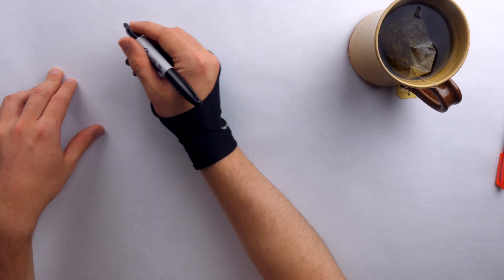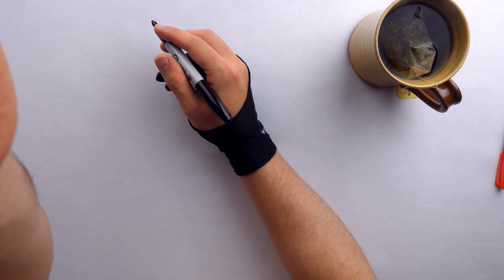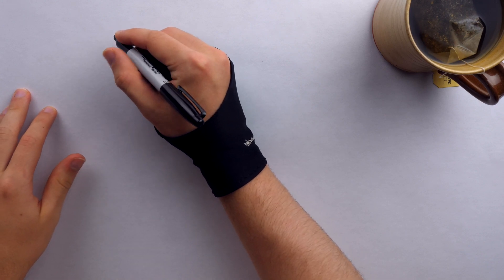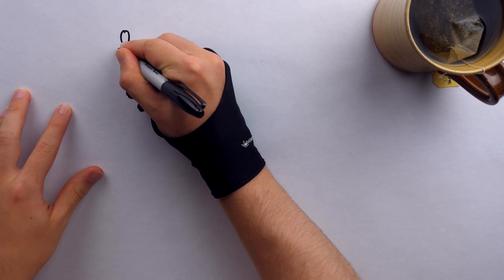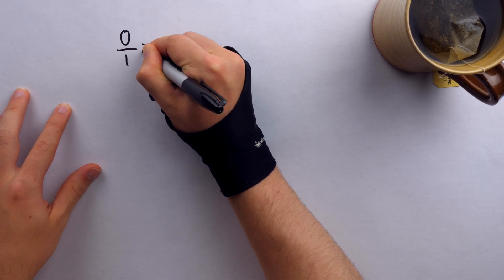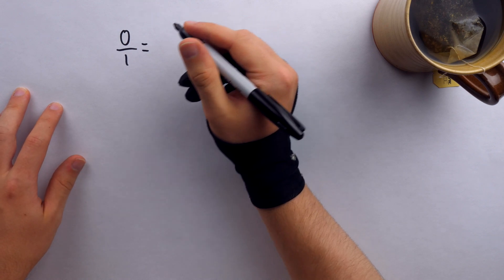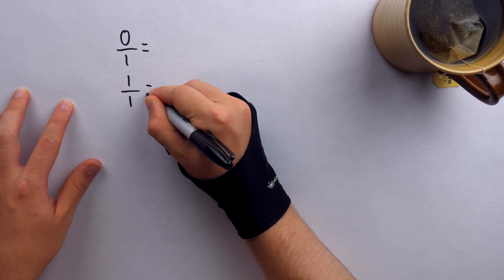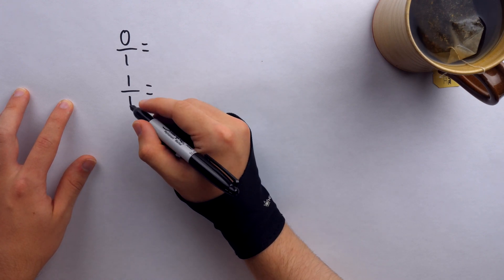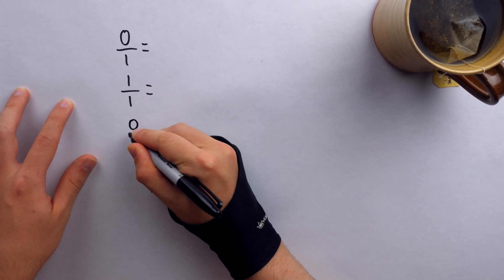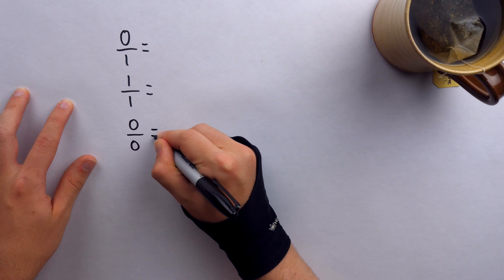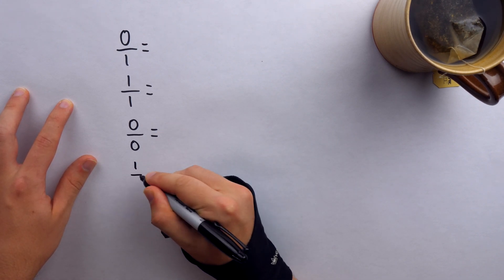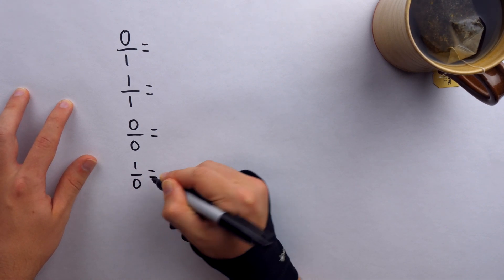So here's your pop quiz. You've got to know this stuff, and if you don't know it, your algebra teacher deserves to be mad at you. Here it is: zero divided by one equals what? One divided by one equals what? Zero divided by zero equals what? And one divided by zero equals what?